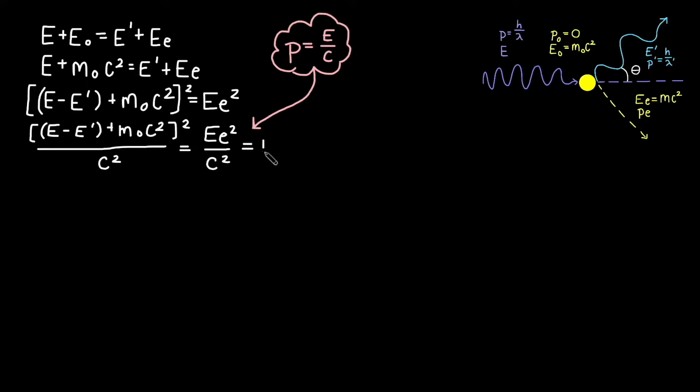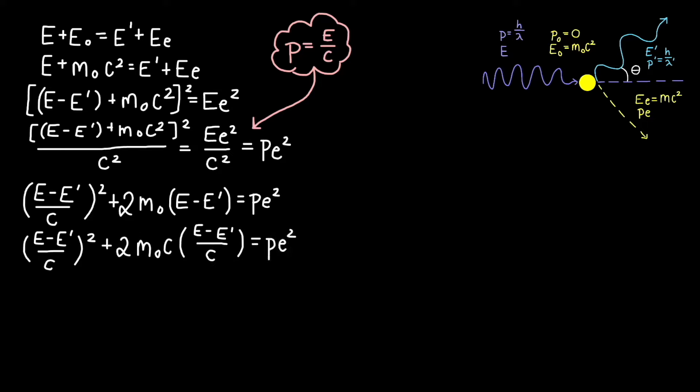In this case, we have p sub e. With some algebraic manipulation, we get e minus e prime divided by c squared plus 2m naught times e minus e prime equals p sub e squared. We can multiply the second term by c over c to get an expression that now resembles our p equals e over c equation. Now, we turn to the conservation of momentum.